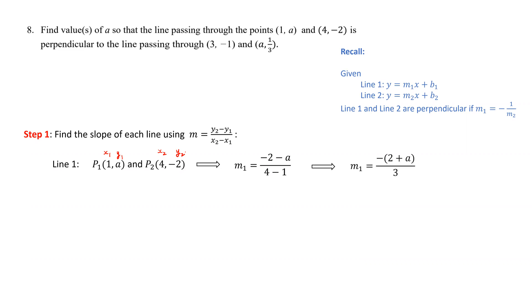We simplify and get m1, the slope of the first line, to be -(2 + a)/3.